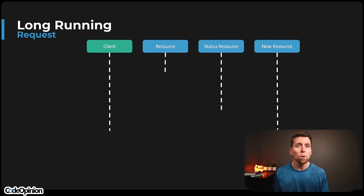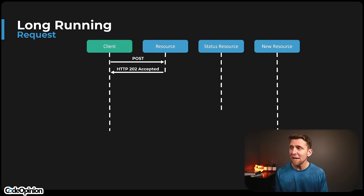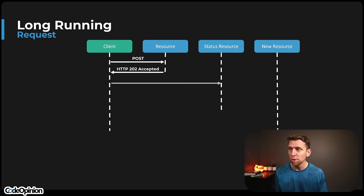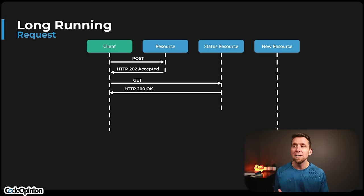One solution is having a resource that provides the status of that initial request. Our client makes an HTTP POST request to generate the transcript. The response is a 202 Accepted, with a header containing a Location pointing to a status resource — some URI we can then make a GET request to. Its response might be a 200 OK, though there are debates on whether it's 200 or 404, indicating the transcript isn't available yet.